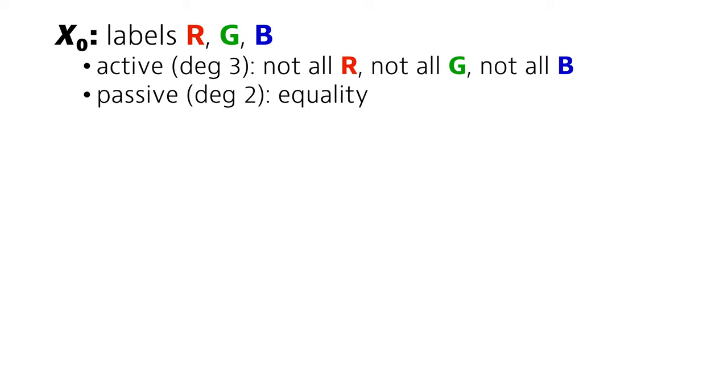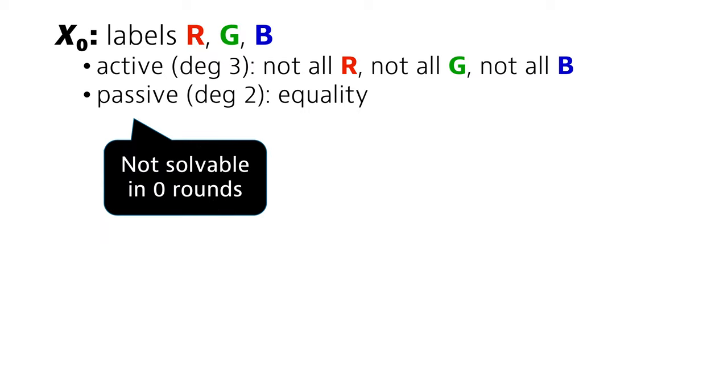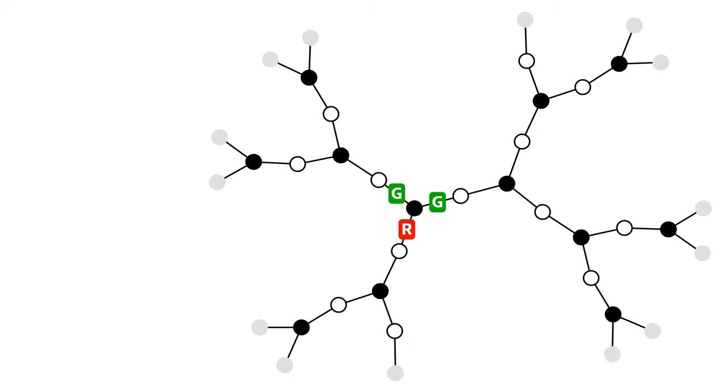We would like to understand how fast this can be solved. It is easy to check that this can't be solved in zero rounds. Active nodes must use at least two different colors, but then if you do it without any coordination, there is a risk that the passive node gets two incident edges with different colors.